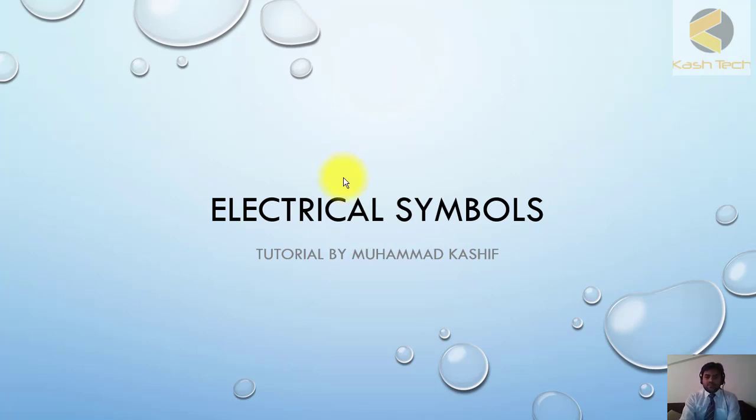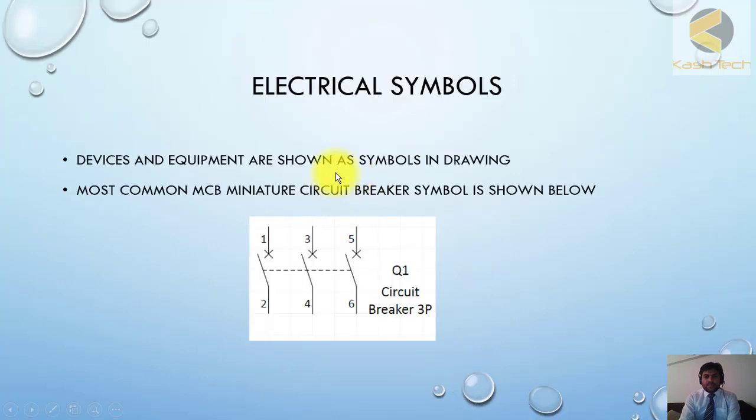For example, I have shown a very common symbol: the MCB. This is basically a three-pole MCB (miniature circuit breaker). The same MCB you can find in your houses—or you can simply say breaker or circuit breaker.